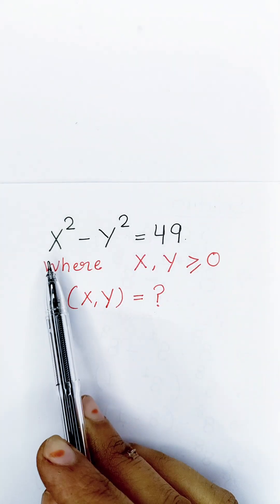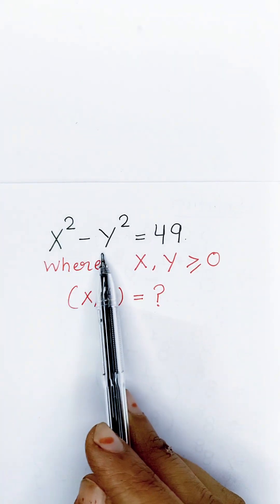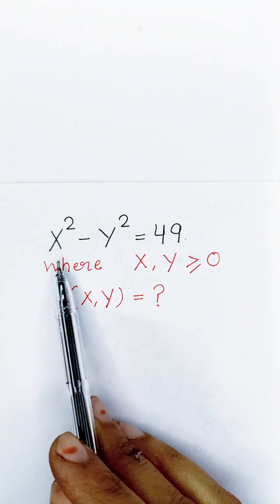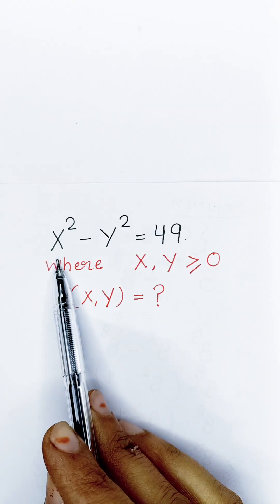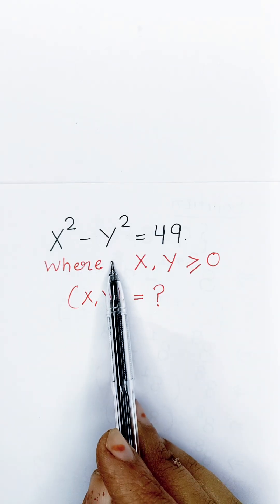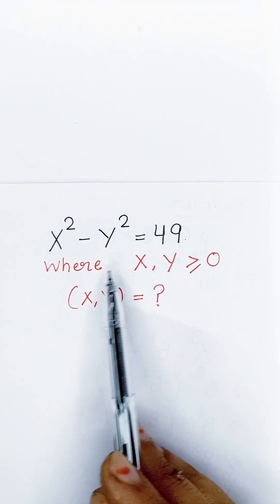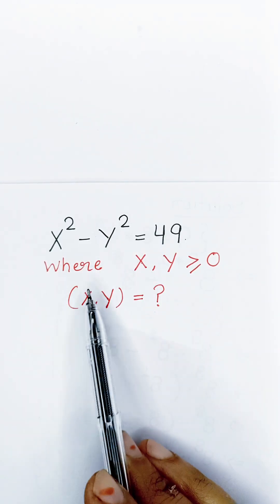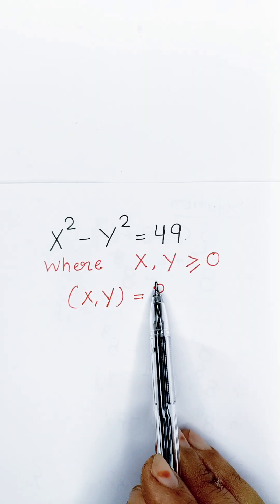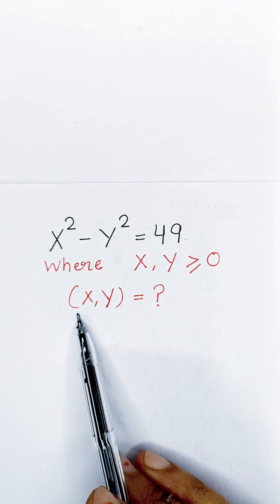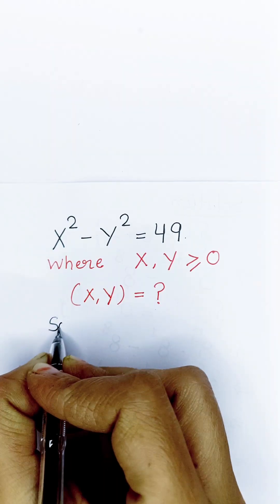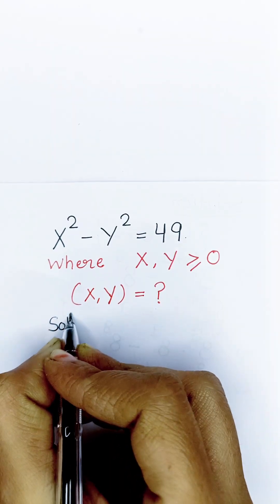Hello everyone. Today we will solve this algebraic problem: x squared minus y squared is equal to 49, where x and y must be greater than or equal to 0. We have to find the value of x and y. So let's start our solution.